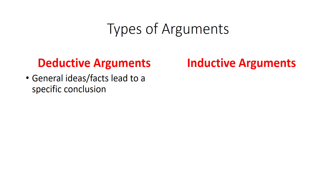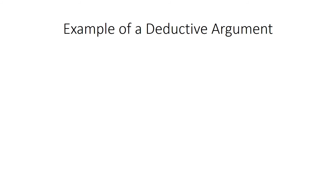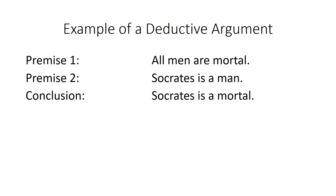Deductive arguments start off with general ideas or facts and then lead to a specific conclusion. But inductive arguments start off with specific observations and those lead to general conclusions. Here's an example of a deductive argument. We start with a very general premise: all men are mortal — general for all humanity. Premise two is more specific: Socrates is a man. And from this we can conclude Socrates is a mortal, which is a very specific conclusion. So we started with a general claim and ended with a specific conclusion.